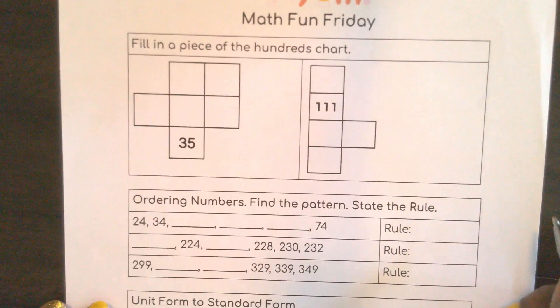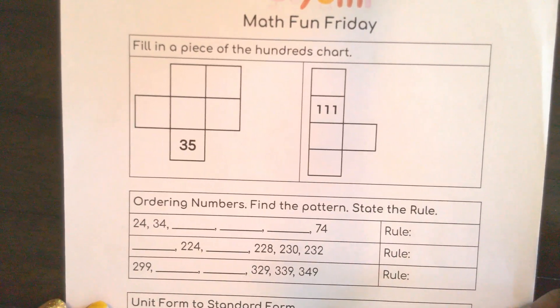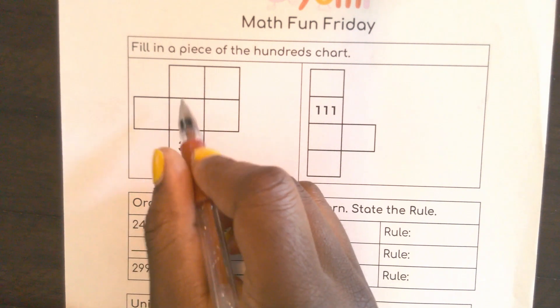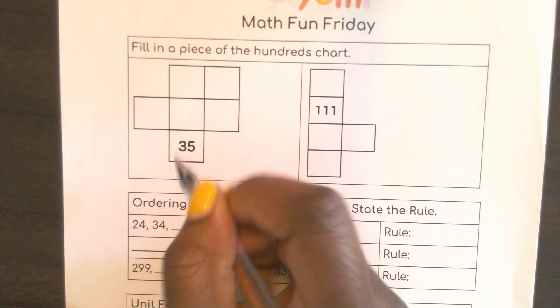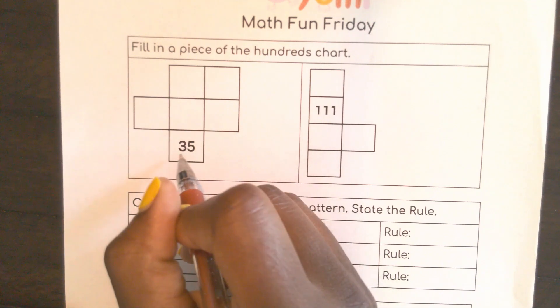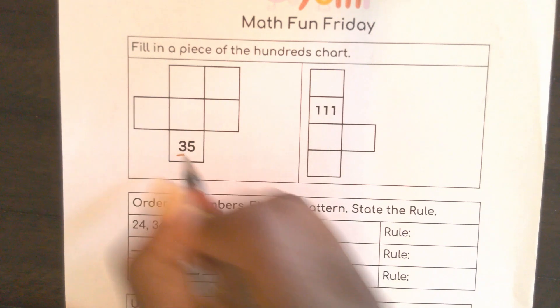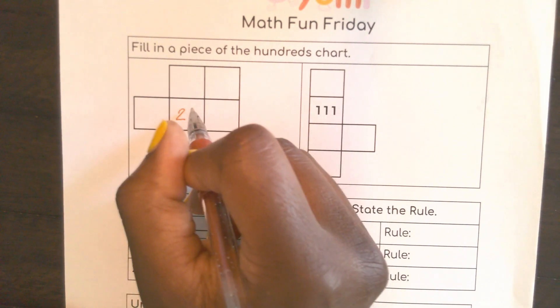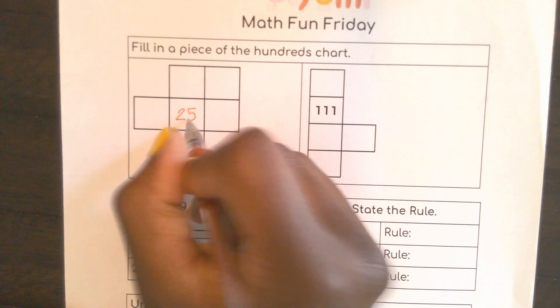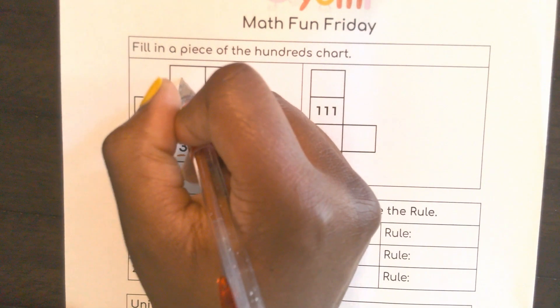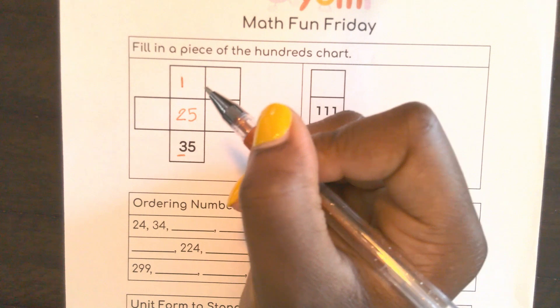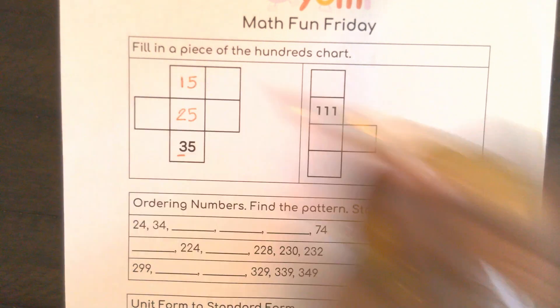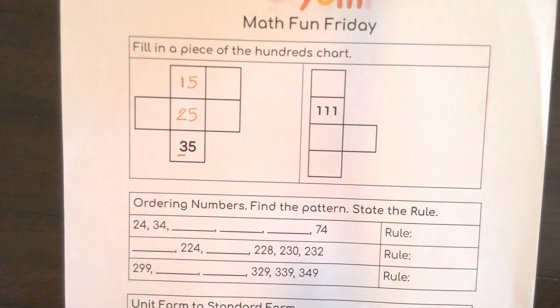Here we are with our pattern. This is what makes our Fridays fun. Here I have 35 and I know if I go up I'm subtracting 10. So my 10 here is 30, my 10 here would be 20, my 1 stays the same. My 10 here would be 1, just 10, 110, and my 1 stays the same.